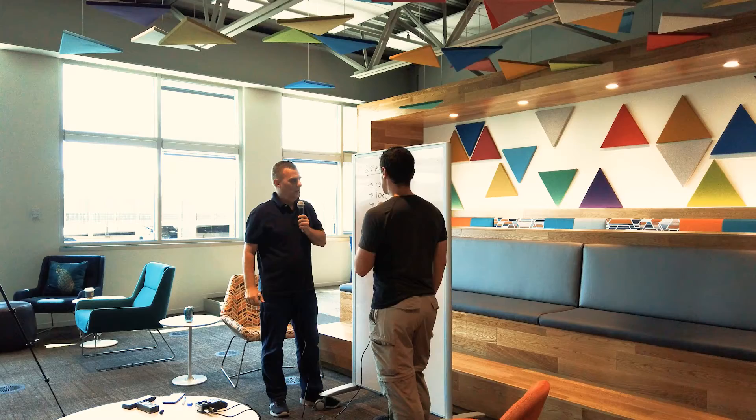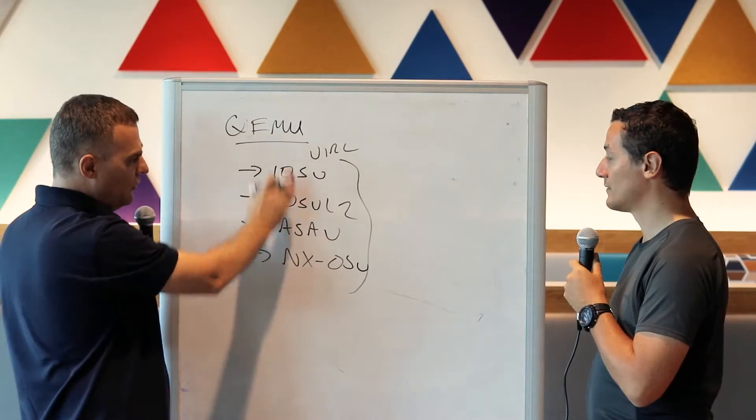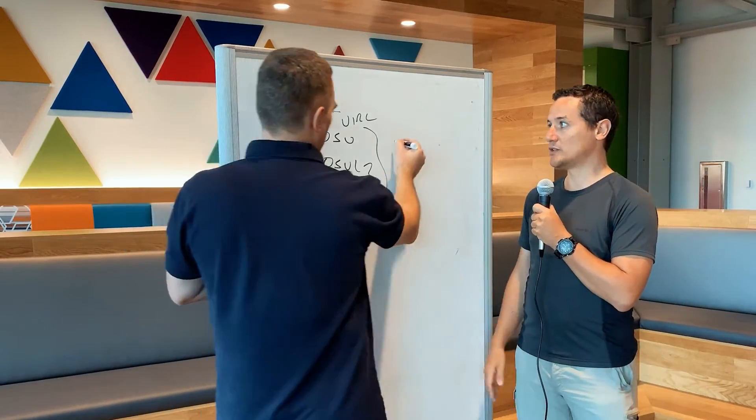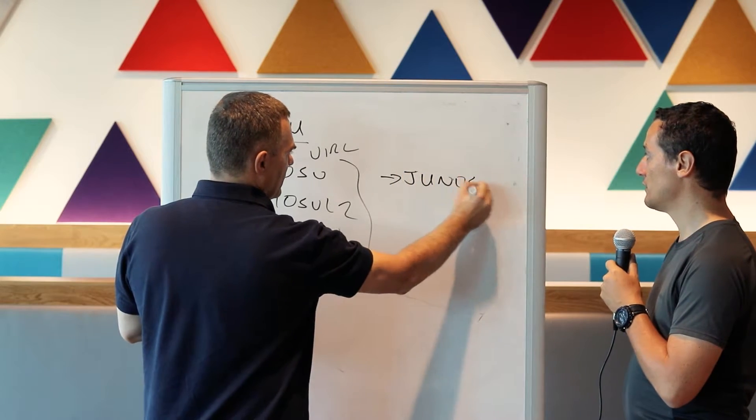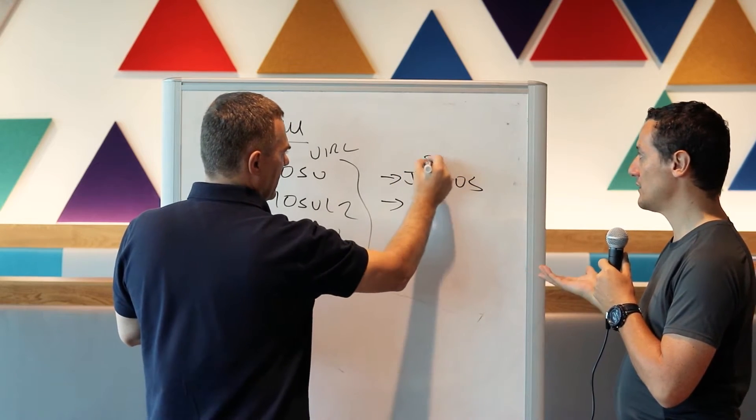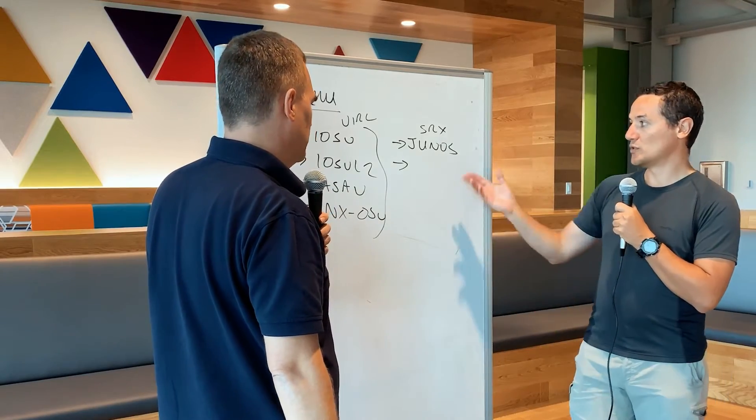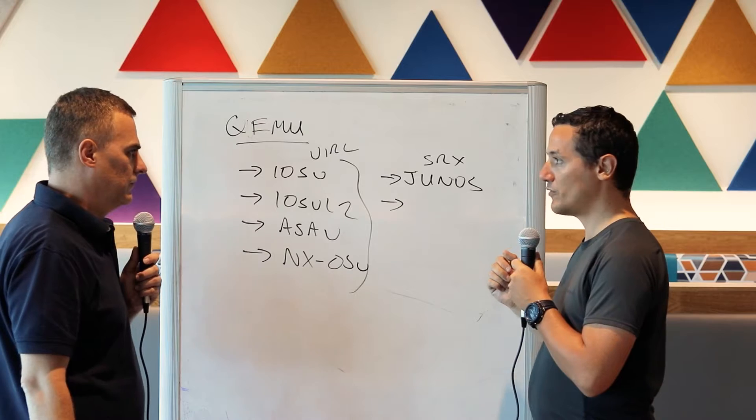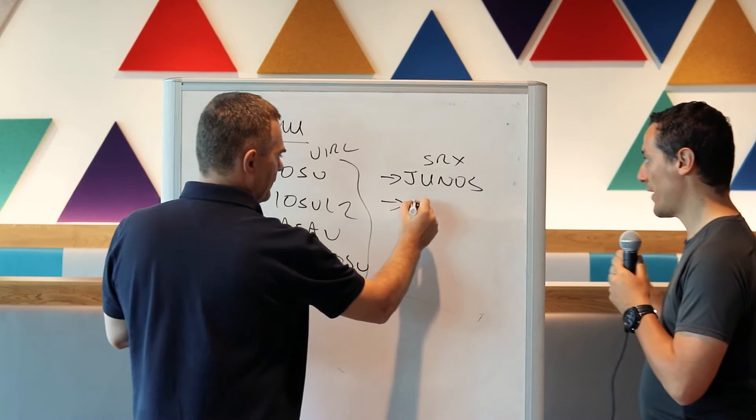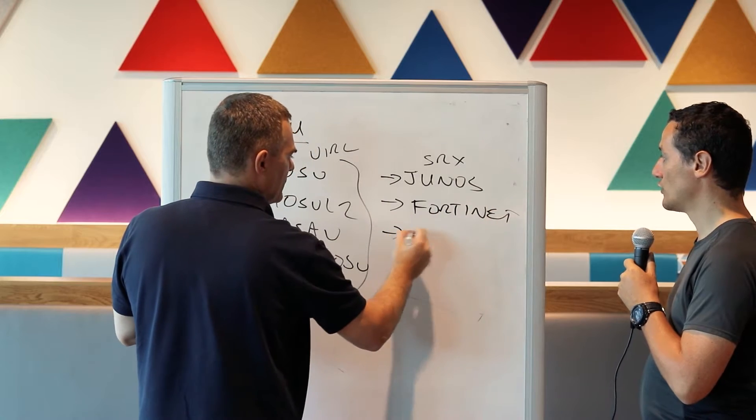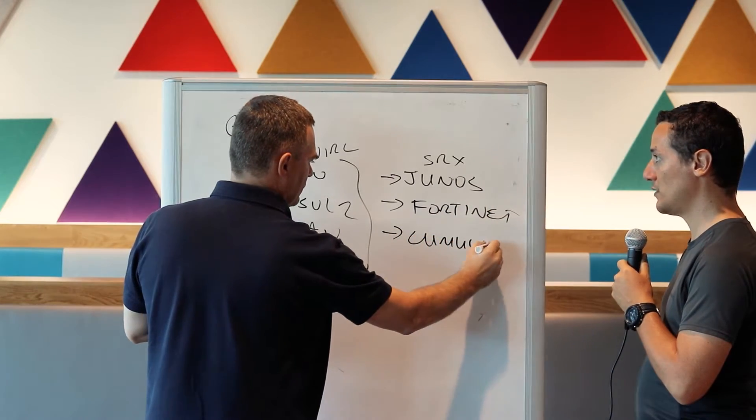But is QEMU only Virl or is it other? No, it's also many other vendors like Juniper. The Junos devices like the VMX appliance, SRX, and those kind of devices. Also vendors like Fortinet have appliances that work on QEMU. And Cumulus, all the Linux-based, they have appliances that run on QEMU.